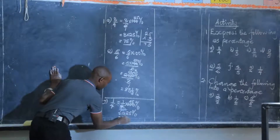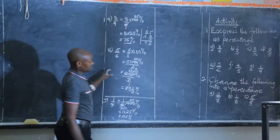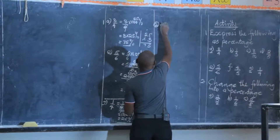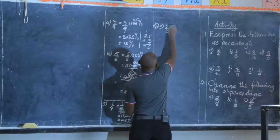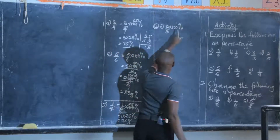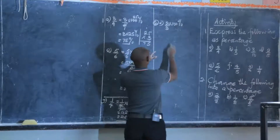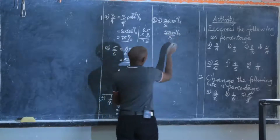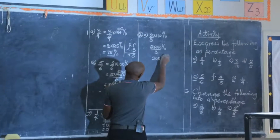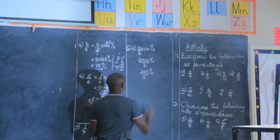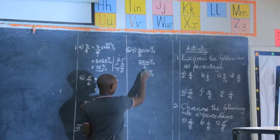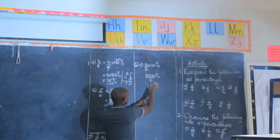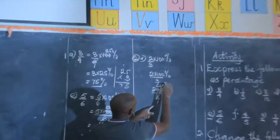Number two (a): 2 out of 3 times 100%. 100 is not exactly divisible by 3, so we multiply 2 times 100% and divide by 3, giving 200/3 percent. 3 into 20 is 6 remainder 2, and into 20 again is 6 remainder 2, so the answer is 66 and two-thirds percent.